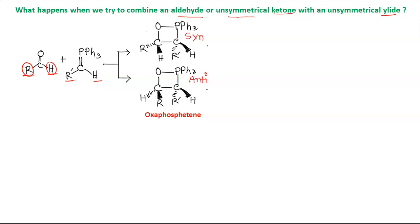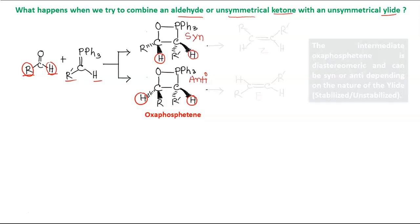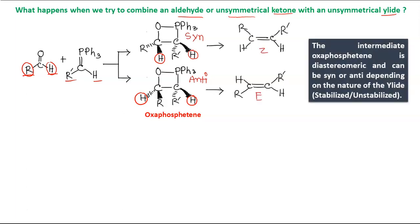If these conditions are satisfied, we will get two different types of oxaphosphetane intermediates. One is the syn form, in which the lowest priority groups are on the same side. The other possibility is the anti-oxaphosphetane, where the two hydrogens are on opposite sides. Since we get two different types of oxaphosphetane intermediates, the result is that when we finally obtain the alkene, there will be two possibilities. The oxaphosphetane intermediate is diastereomeric in nature — either syn or anti.